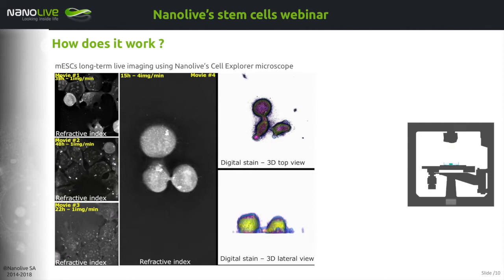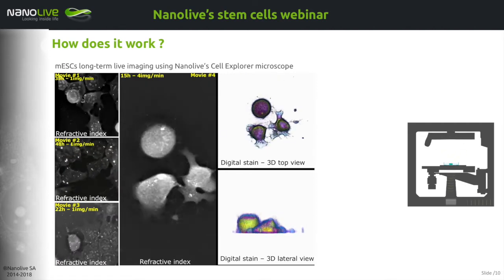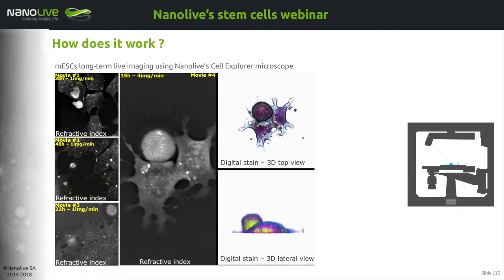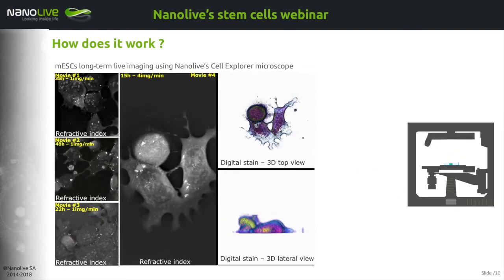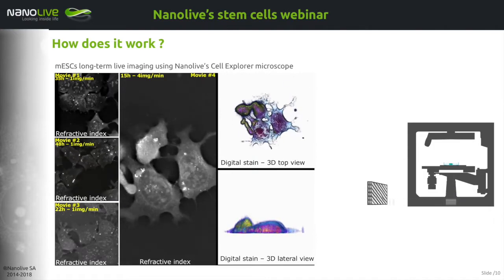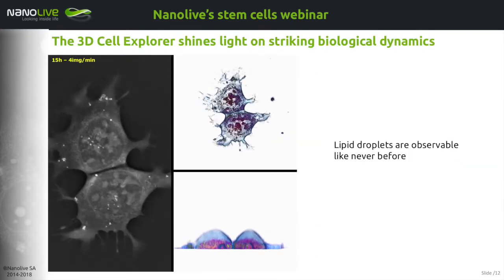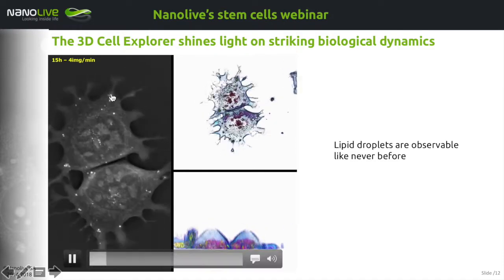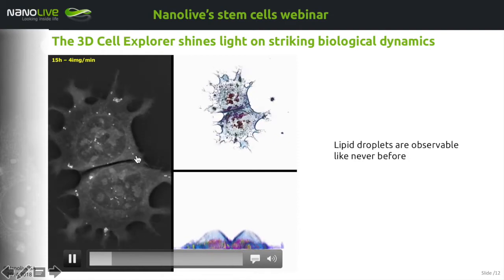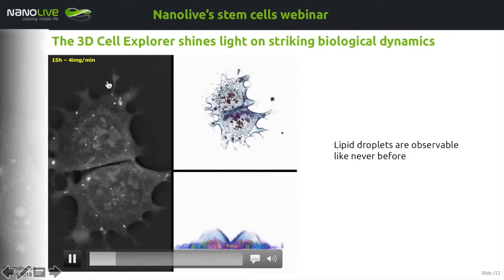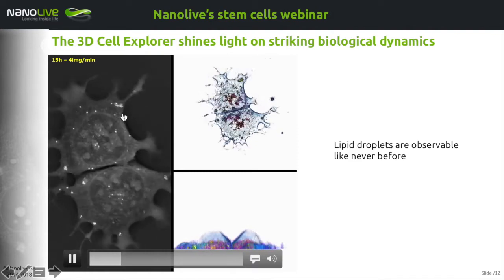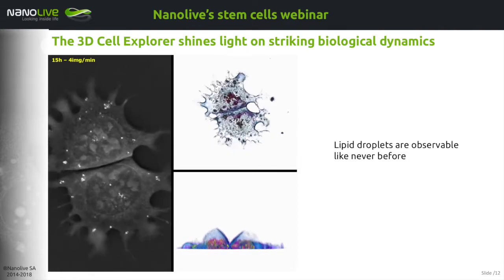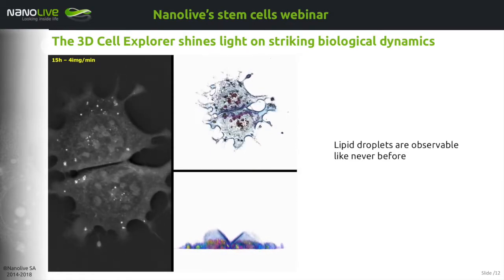So now let's see what type of biology can be observed with our microscope, and I will guide you through a couple of dynamic processes that we could image like never before. The first organelle I would like to speak about are lipid droplets. Lipid droplets are those white dots within mouse embryonic stem cells that you can see moving all over the place. Lipid droplets are storages for lipids, and therefore they are of high interest for people studying metabolism.